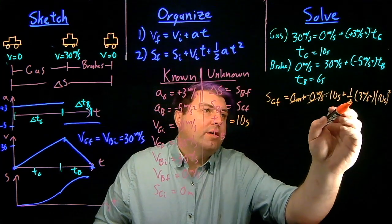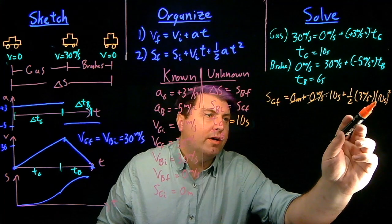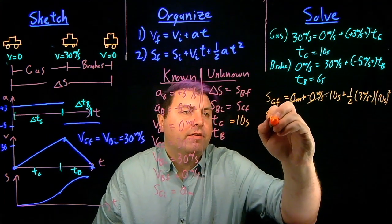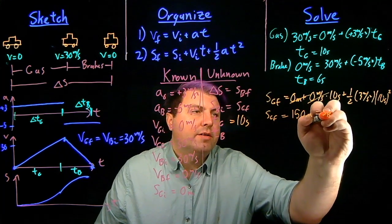10 squared is 100. 100 times 1.5 is, Sgf is equal to 150 meters, which is also equal to Sbi.